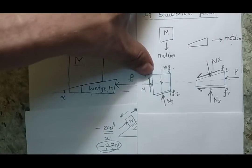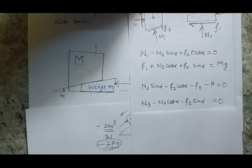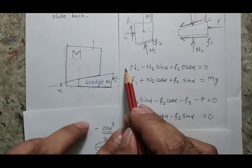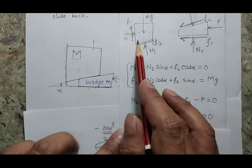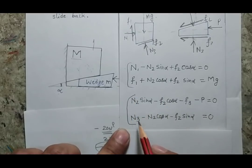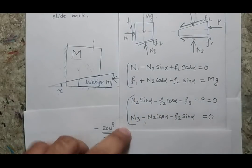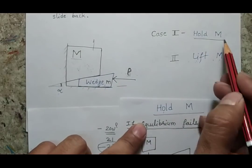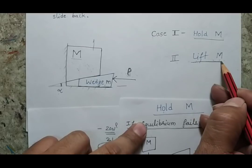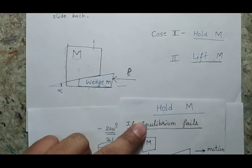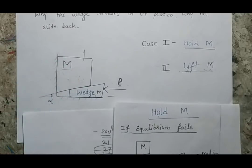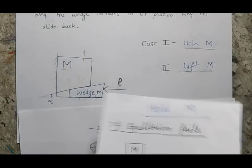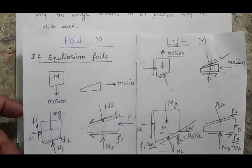Now I have defined all the forces, and based on these forces I can again write the equilibrium equations — horizontal and vertical force balance for each body. Please understand that there are two conditions: one to hold M and another to lift M. We should be very careful when solving a problem because the holding and lifting conditions define the direction of friction.